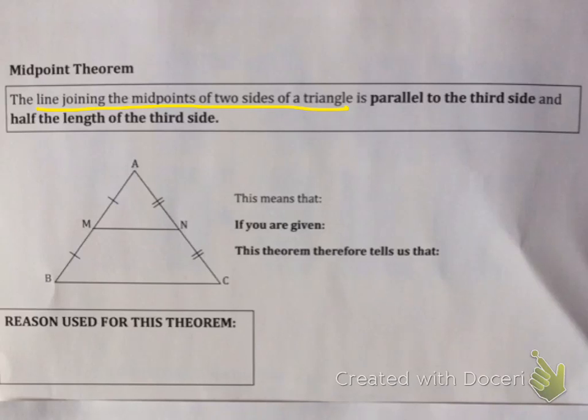First of all, the midpoint theorem. The midpoint theorem says if you are given a line joining the midpoints of two sides of a triangle, so if you're given M and N in the picture are both midpoints, in this case they've labeled that the two parts are equal, hence M and N are midpoints.